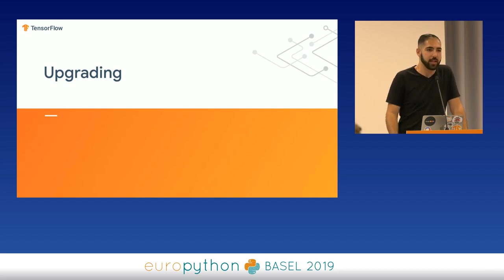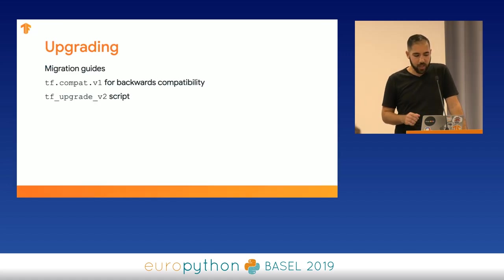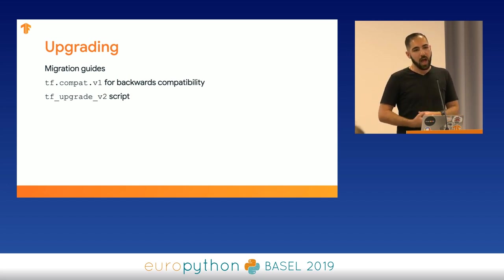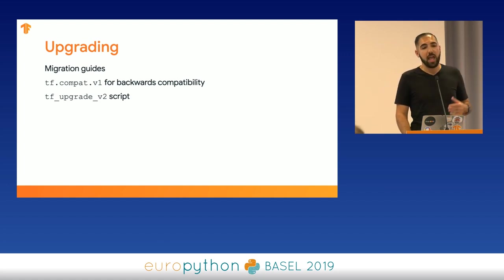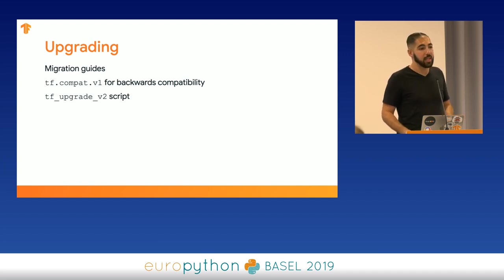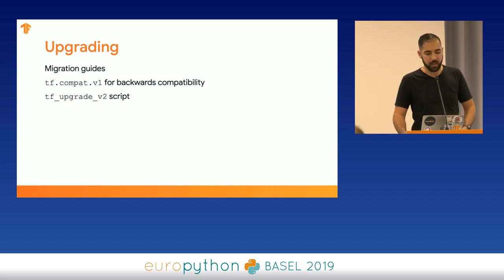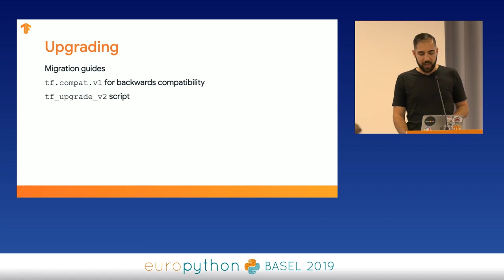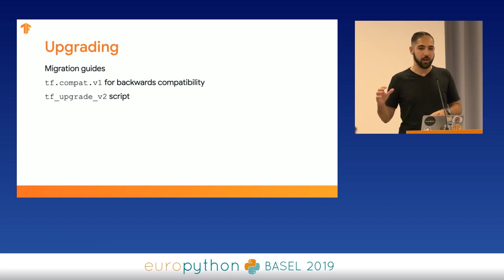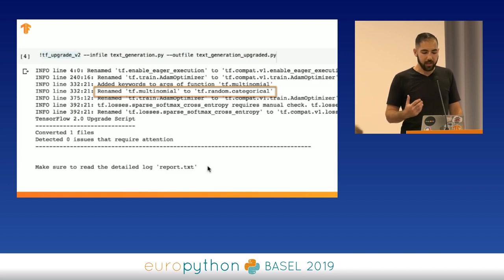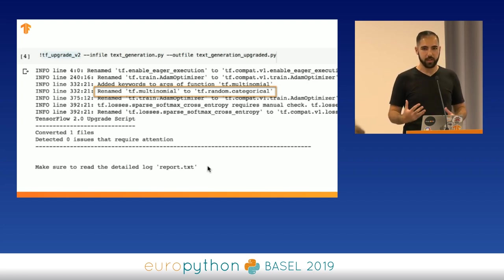If you're using TensorFlow 1.x and want to upgrade to 2.0, we have migration guides available at tensorflow.org. We also have tf.compat.v1, which gives you access to some of the older APIs if you're not ready to fully move away from them. There's also the tf_upgrade_v2 script — similar to the Python 2-to-3 script — which you can execute on any Python script to convert TF 1.x code to 2.0 code automatically, and it will tell you and show you exactly what was changed.